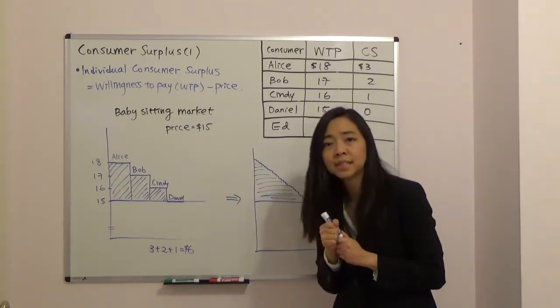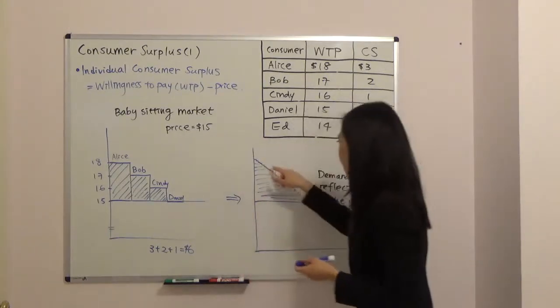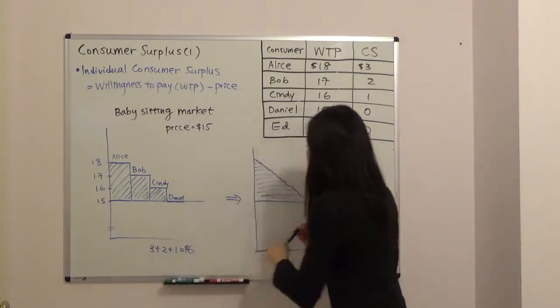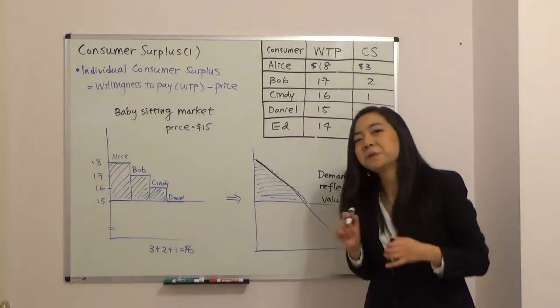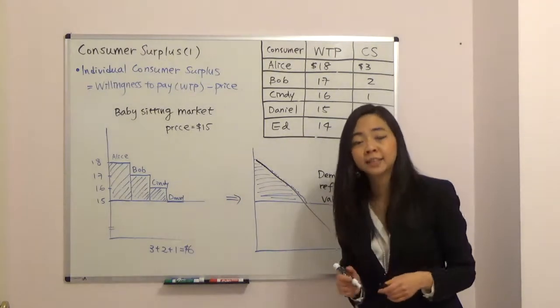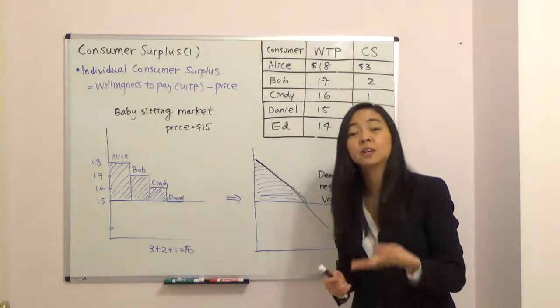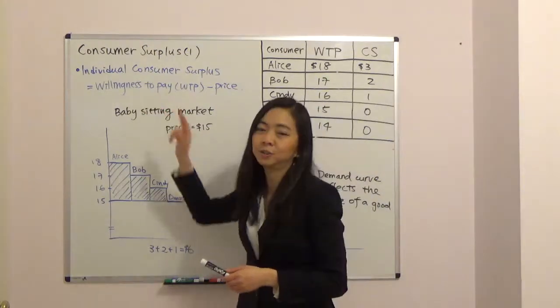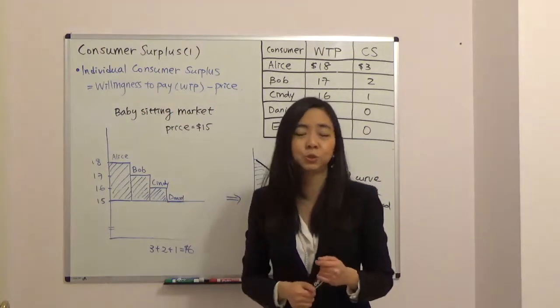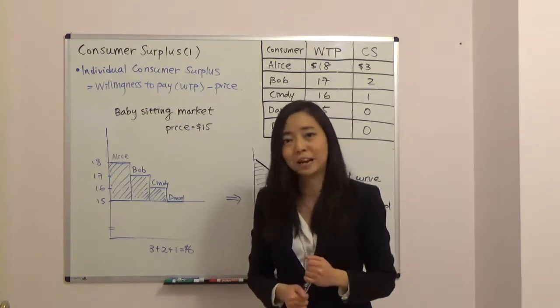And how do we sum that up? Guess what? When you have many consumers in small steps, this is actually just your demand curve. So now you know the demand curve actually reflects the value of the good or service to the consumer. And that value really is just your willingness to pay, meaning the highest price you're willing and able to pay for a product or service.